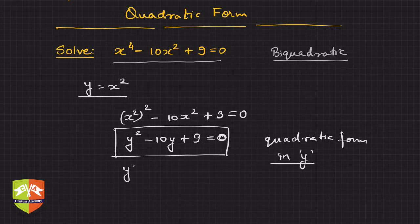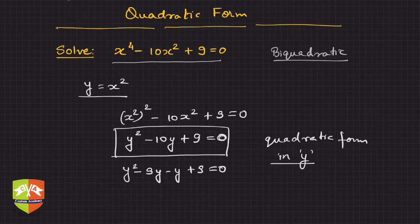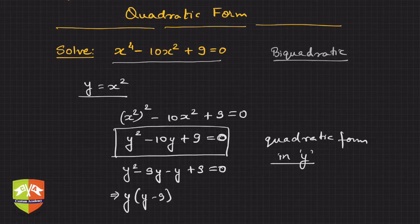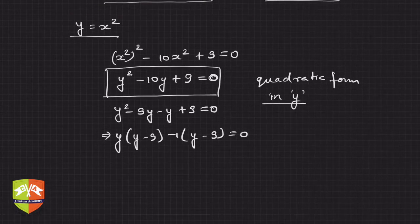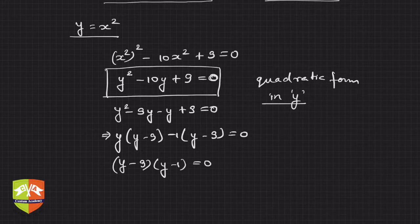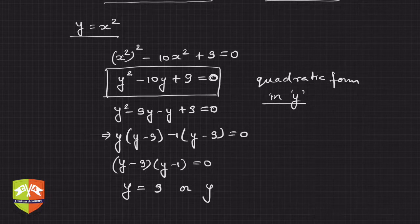Here I can split the middle term and write: y squared minus 9y minus y plus 9 equals 0. Taking common factors gives y times (y minus 9) minus 1 times (y minus 9) equals 0. This becomes (y minus 9)(y minus 1) equals 0, meaning y equals 9 or y equals 1.